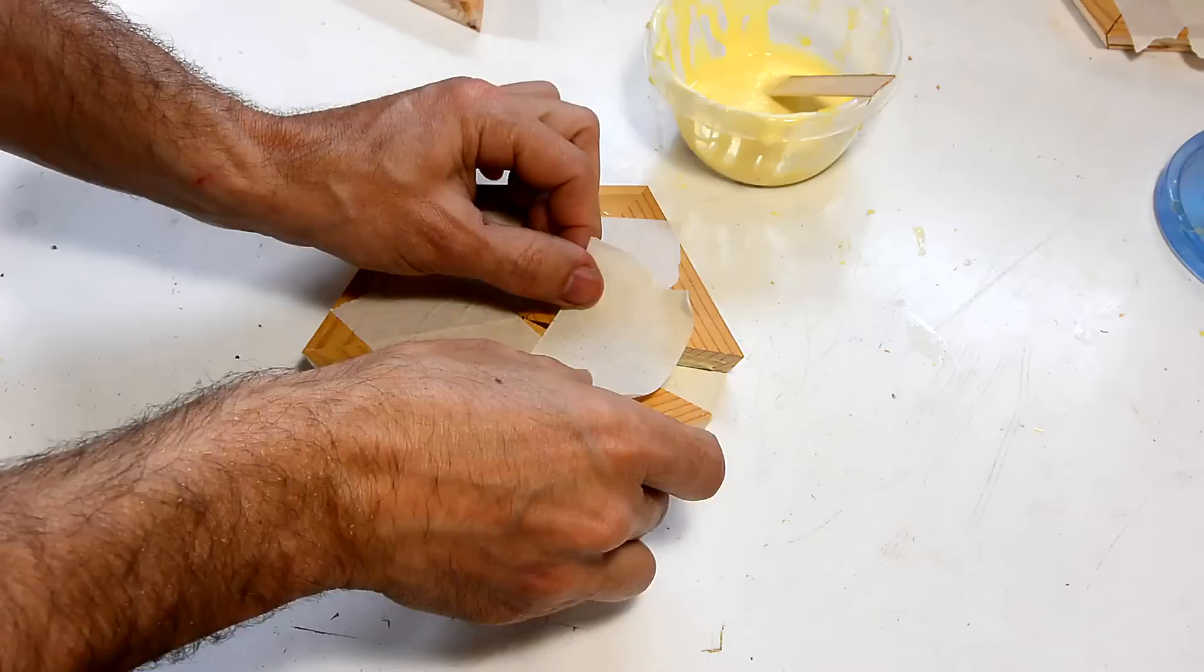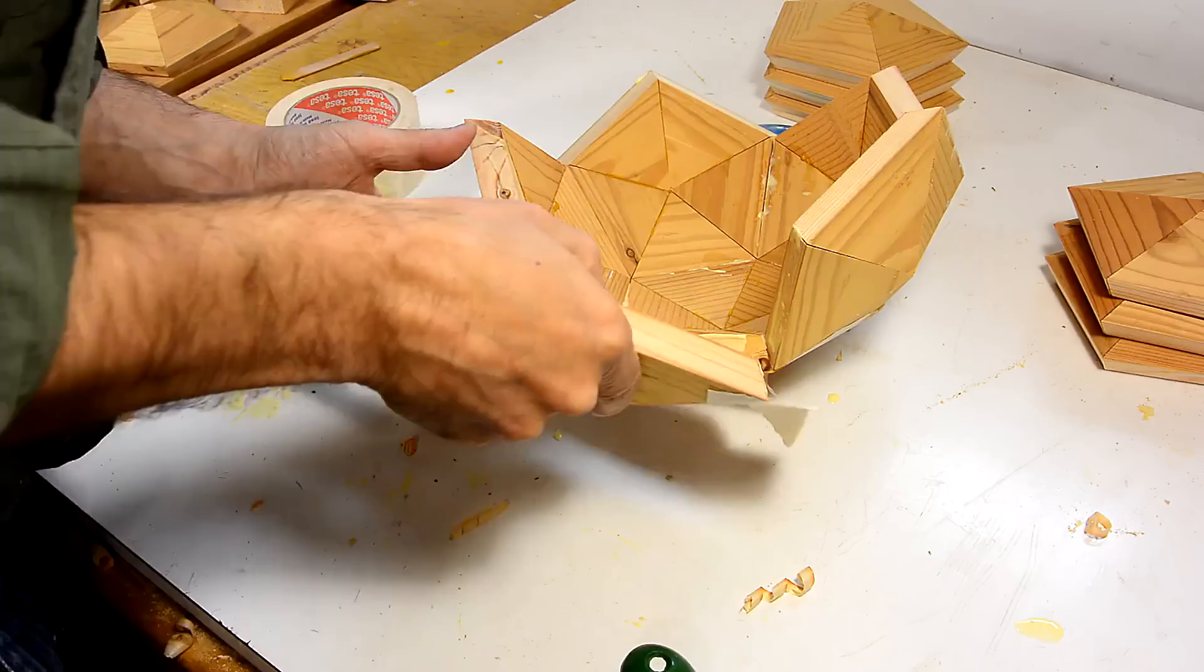In a previous video, I experimented with making a 60-sided dome out of wooden triangles, and that's fairly round. But then I was thinking, how can I make this thing even rounder?